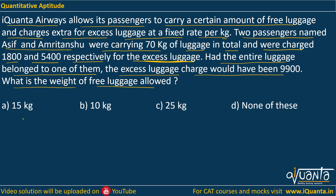We know that there is some free luggage — let it be F. This is the weight of the free luggage that they can carry. And if there is some extra luggage, then they have to pay for it separately at a fixed rate per kg. One of them was charged 1,800 for excess luggage and another was charged 5,400. So we can say that the second one is carrying 3 times the excess luggage of the first one. If one is carrying x kg extra luggage, another would be carrying 3x kg extra luggage.